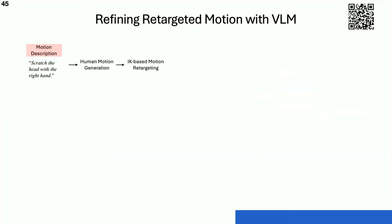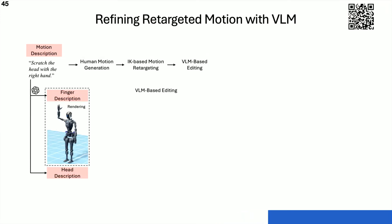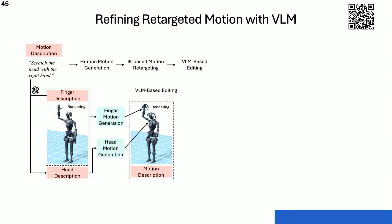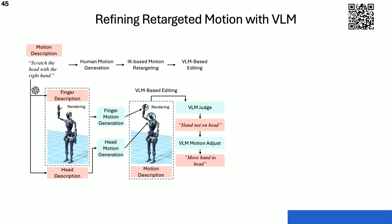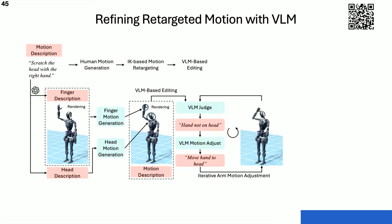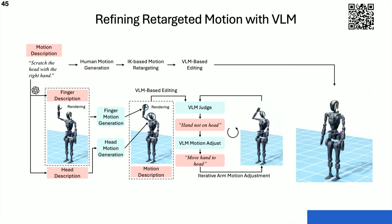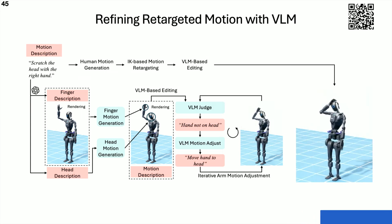Therefore, we propose to use vision language models to refine the humanoid motion. We use vision language models to generate head and finger motion, which was missing from the human motion, and then we iteratively refine the upper body motion. The resulting motion is much more natural and more expressive.